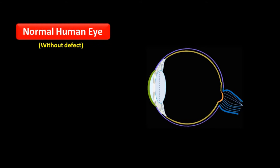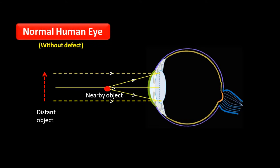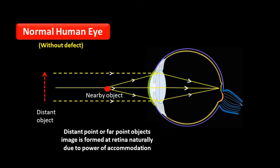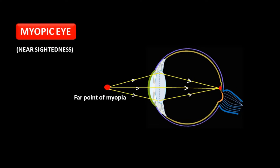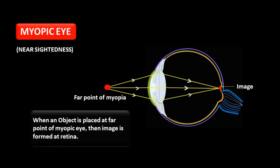This is the normal human eye. A normal eye can see distant objects clearly as well as nearby objects. The rays coming from distant objects and nearby objects, when they pass through the eye lens, refract and are collected on the retina. So the image is formed on the retina. The far point image is formed at the retina naturally due to the power of accommodation. In the myopic eye, the far point is closer. When rays from a nearby object are refracted, they are collected on the retina, so the image is formed on the retina.